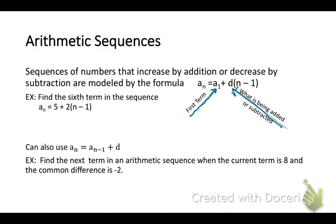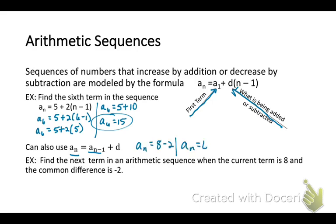The example says find the sixth term. We're going to plug in 6 for n into that formula. On the right side of the equal sign, we'll do the math. We'll subtract and then multiply. So our sixth term, a sub 6, equals 15. You can also use this other type of notation called recursive. A sub n and a sub n minus 1 stands for the current term and the previous term. Find the next term if the current term is 8. The next term would be our current term, which is 8, and then in this case plus our difference, but our difference is minus 2. So we'll subtract 2. That term would be 6.